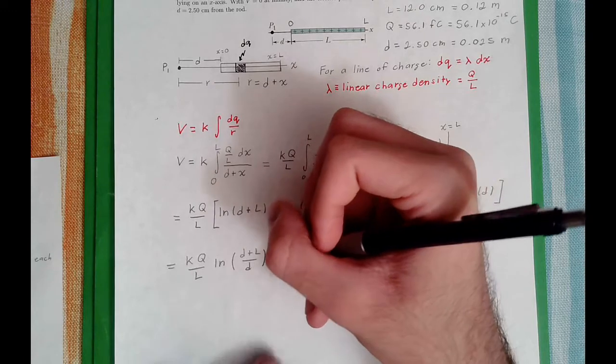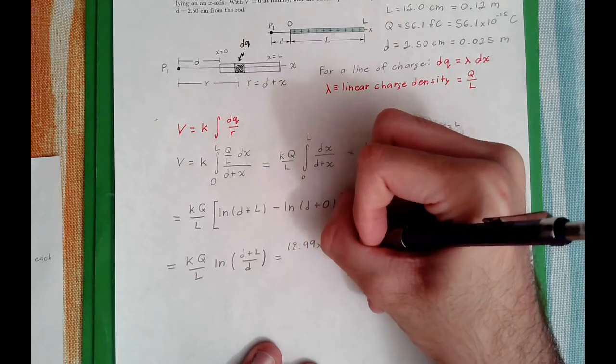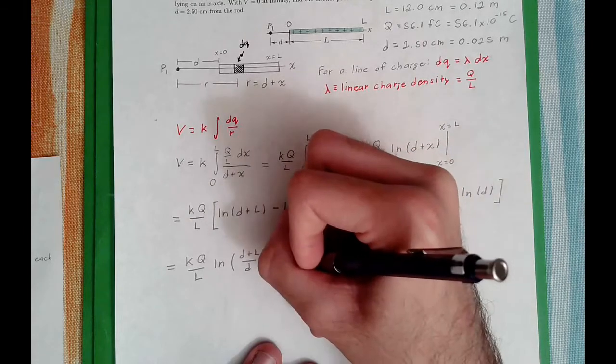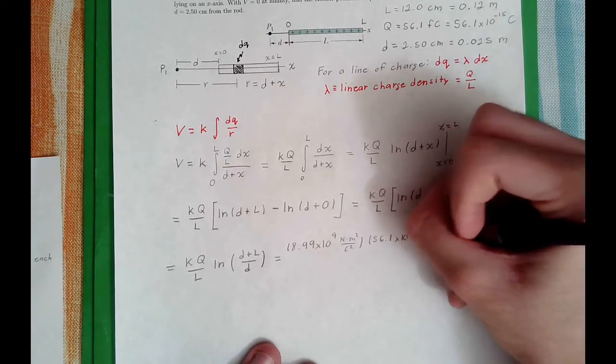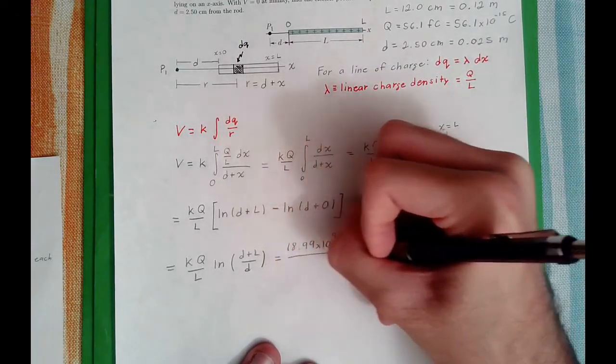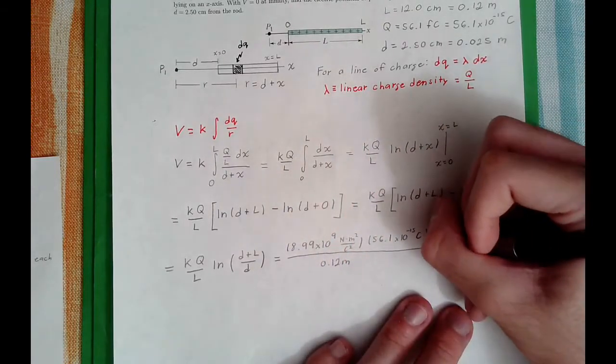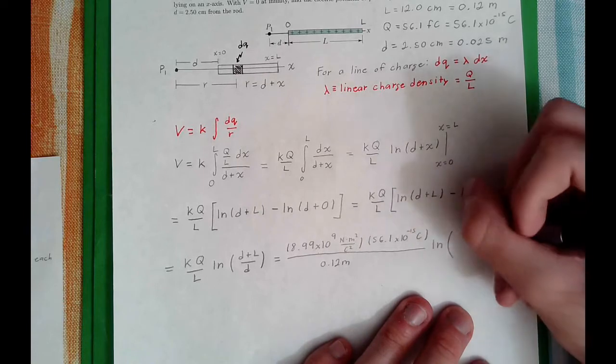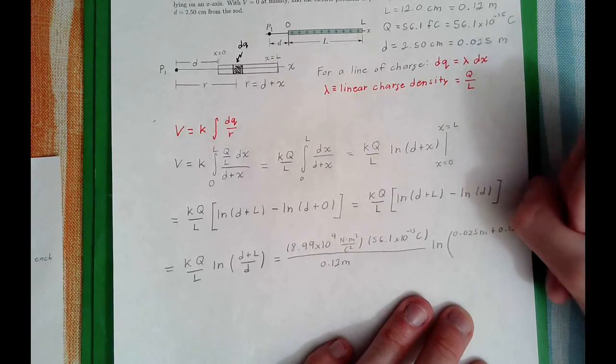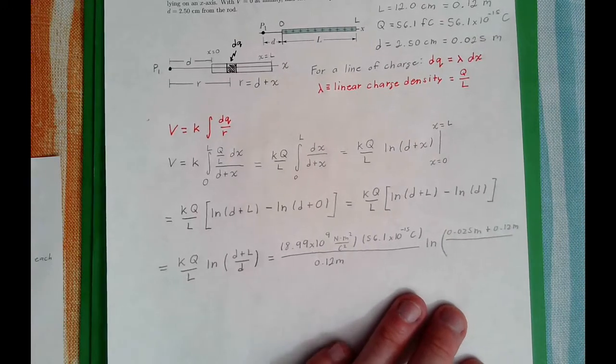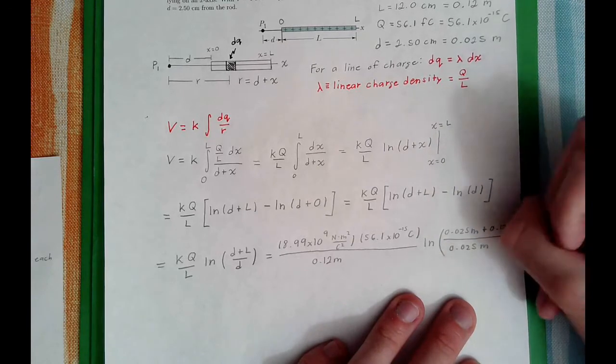So K is 8.99 times 10 to the 9th newton meters squared per coulomb squared, times Q, 56.1 times 10 to the minus 15 coulombs. This whole thing is divided by L, which is 0.12 meters. Then we do the natural log of D plus L, so 0.025 meters plus 0.12 meters, divided by D, which is 0.025 meters.